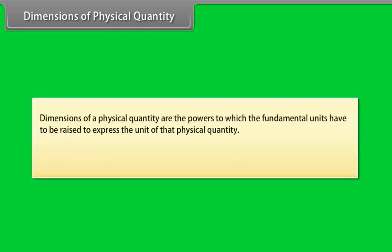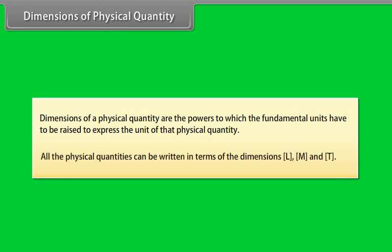Dimensions of physical quantity: Dimensions of a physical quantity are the powers to which the fundamental units have to be raised to express the unit of that physical quantity. All physical quantities can be written in terms of dimensions L, M, and T.